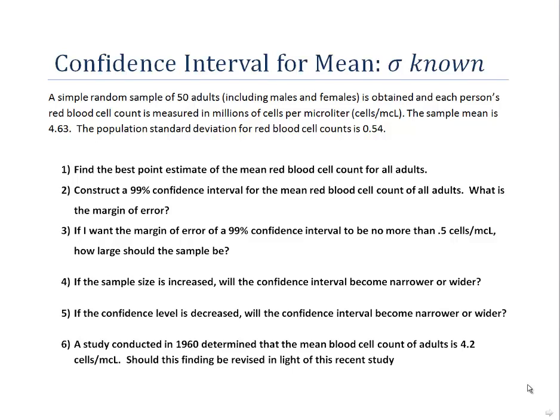In this kind of problem, we want to calculate a confidence interval for a mean in a special case where sigma, the population standard deviation, is known. We have a simple random sample of 50 adults, and we've measured their red blood cell count in millions of cells per microliter. We've calculated a sample mean, and we're assuming we know the population standard deviation of 0.54. That's not often the case, but here we assume we know sigma — that's the key distinction from when we don't know sigma and just have S, a sample standard deviation.